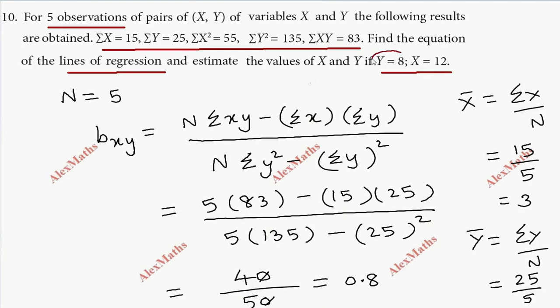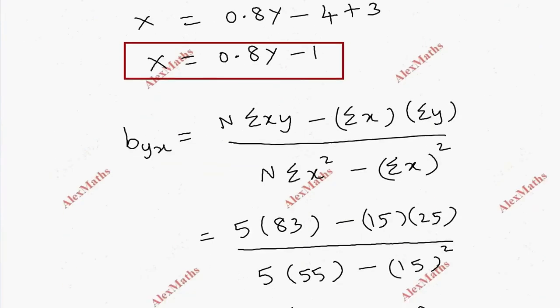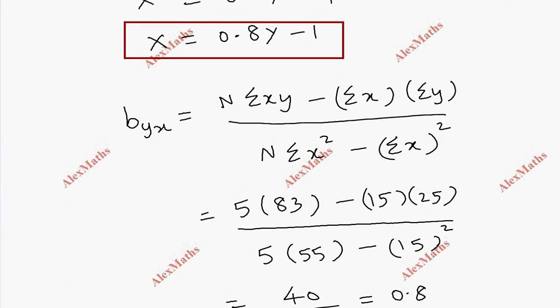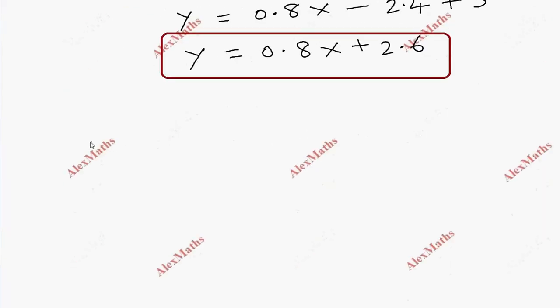So the two lines of regression are: x equal to 0.8y minus 1, and y equal to 0.8x plus 2.6.